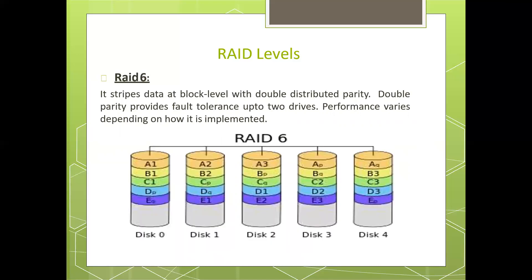RAID level 6 stripes data at the block level with double distributed parity. Double parity provides fault tolerance up to two drives. Performance varies depending on how it is implemented.